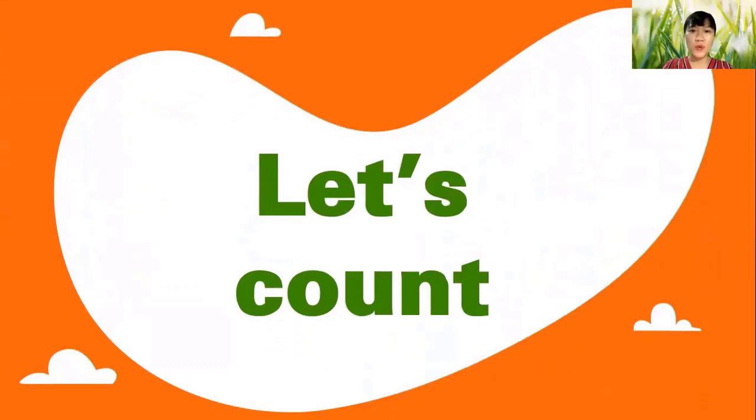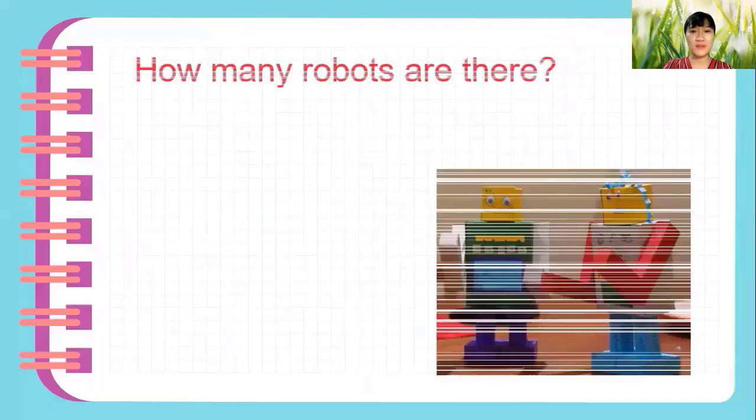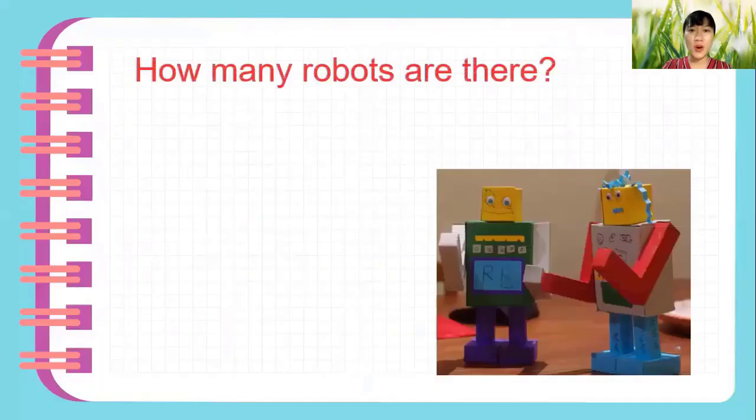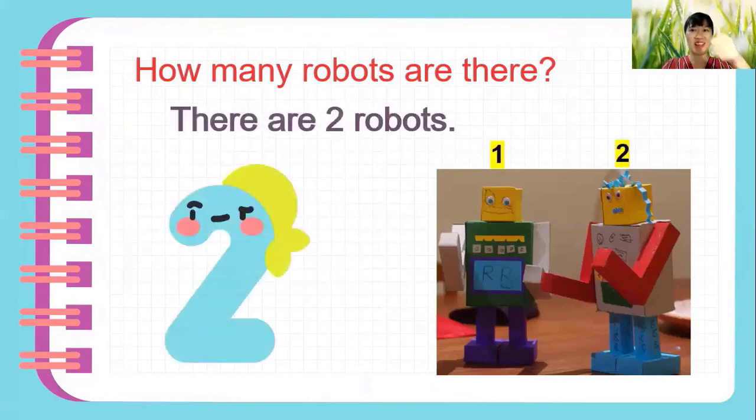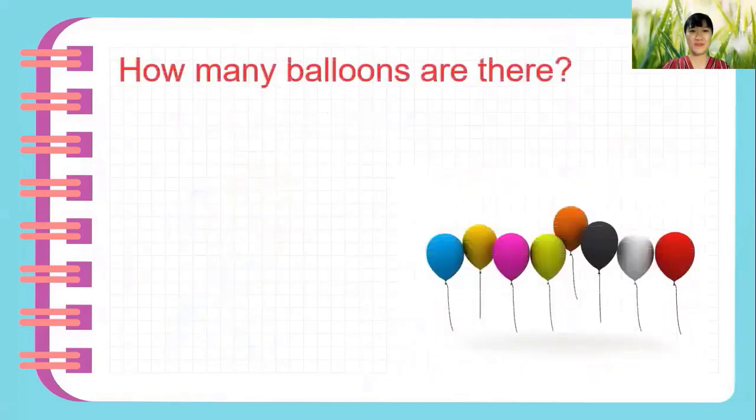Now, we move to next part. Let's count. How many robots are there? Look at the picture and count. One. Two. So, there are two robots. Very good. Now, it's your turn.